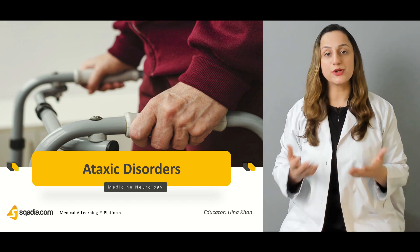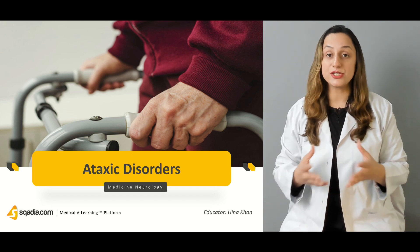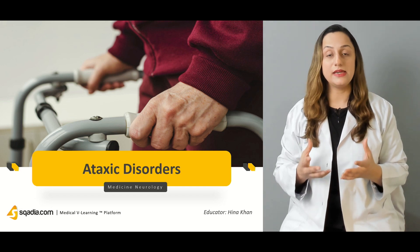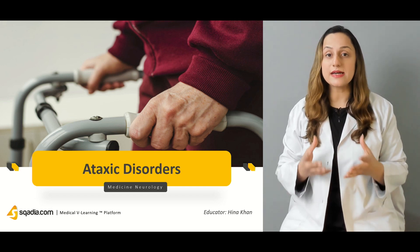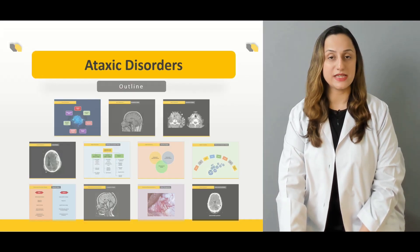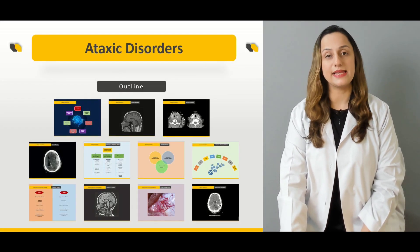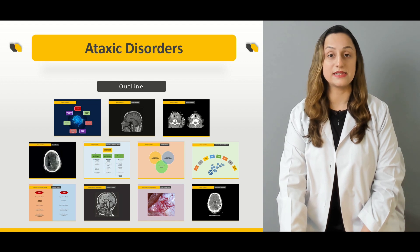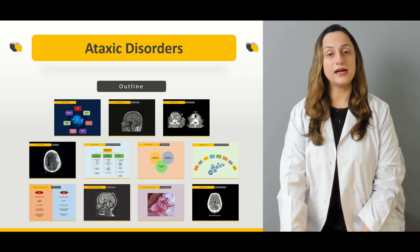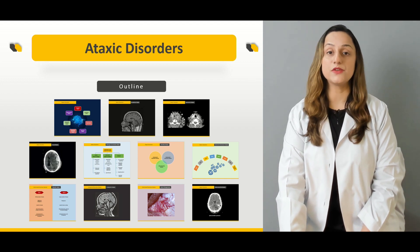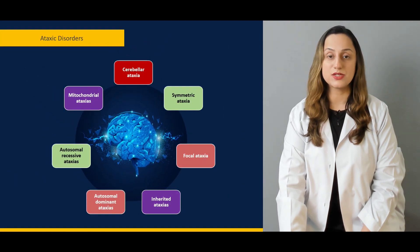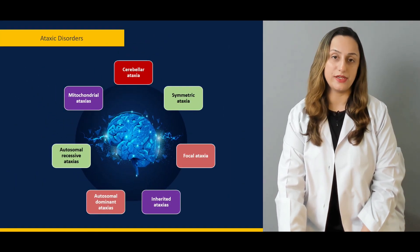We usually come across these patients who present with an ataxic gait, slurred speech, and difficulty in the ocular movements, and we're going to discuss what is the underlying cause towards the development of such conditions. The outline of this lecture covers the signs and symptoms, the clinical features, and the underlying pathophysiological basis for the development of such ataxic conditions.